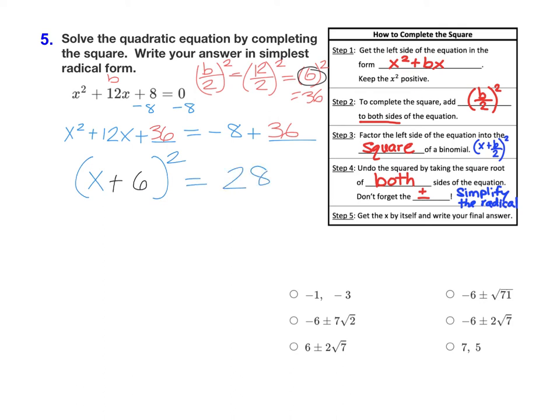And now we're ready to move on to step 4, which is undoing the squared by taking a square root of both sides, and don't forget the plus or minus. So we go like this, square root on each side. That's going to cancel out the squared, getting x plus 6 alone here. And x plus 6 is equal to plus or minus the square root of 28.